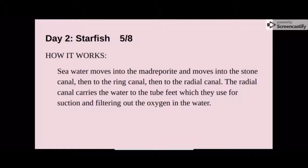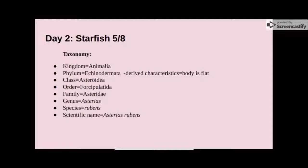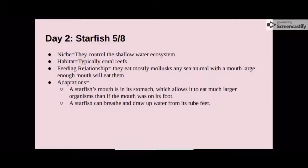The derived characteristic of the starfish is that its body is flat, and its scientific name is Asterias rubens. Its niche is that it controls the shallow water ecosystem, and its habitat is that it mostly lives in coral reefs. Its feeding relationship is that it eats mostly molluscs, and any sea animal with a mouth large enough to eat the starfish will eat them.